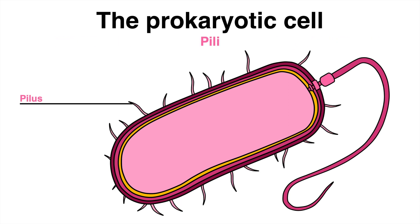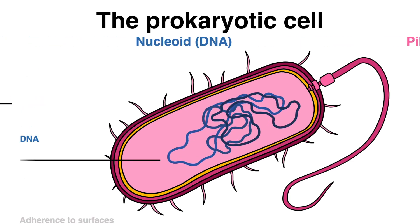Some prokaryotic cells have appendages such as pili, also known as fimbriae. These are short hair-like structures that help the cell attach to surfaces or other cells. This attachment is important for several bacterial processes, including colonization, biofilm formation, and infection.